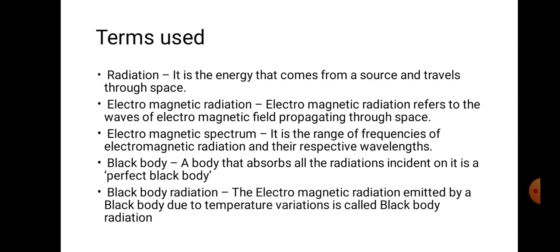Next, electromagnetic radiation refers to the electromagnetic field propagating through space. The electromagnetic spectrum is the range of frequencies of electromagnetic radiation — it is the arrangement of all electromagnetic waves with respect to wavelength or frequency.